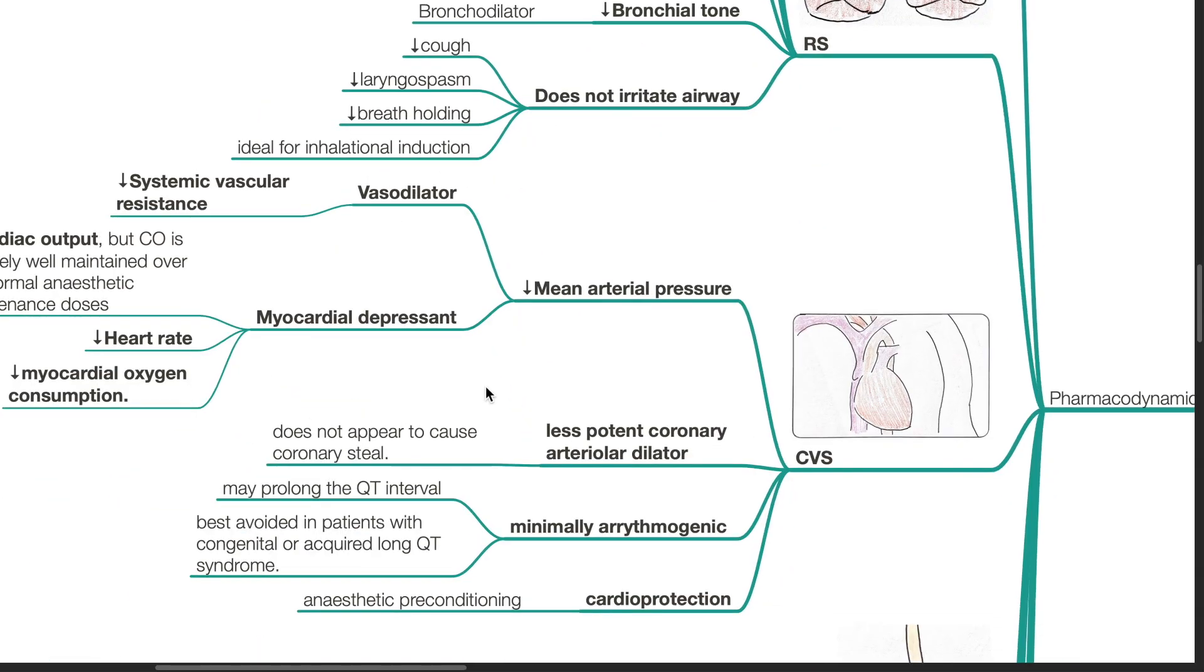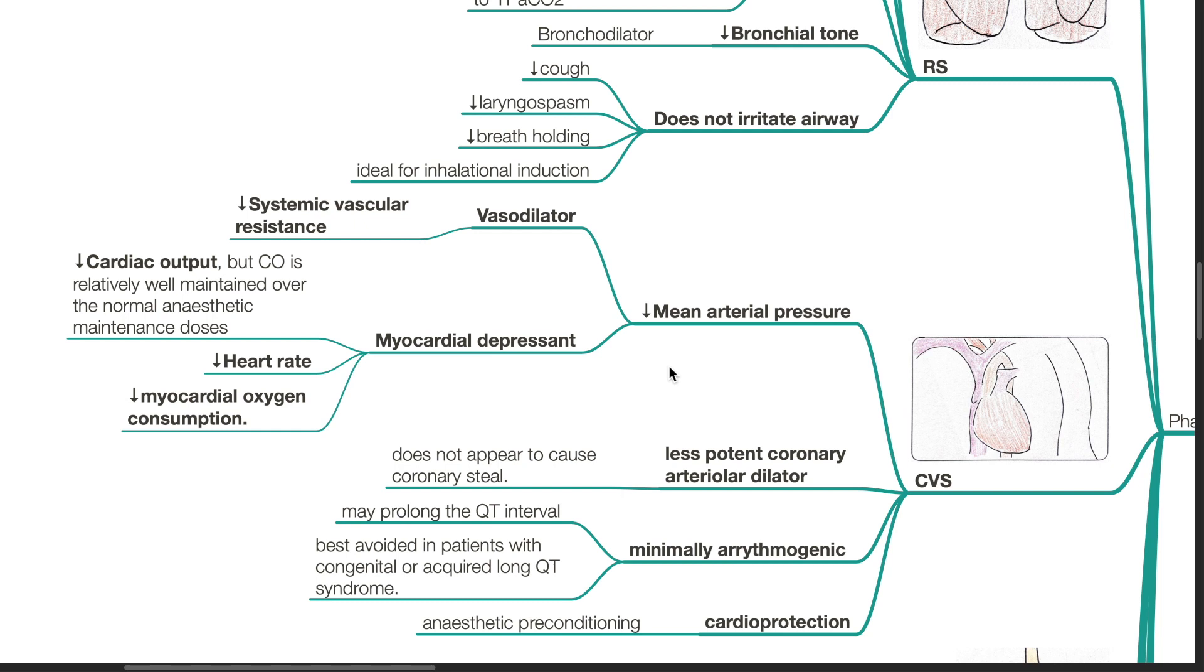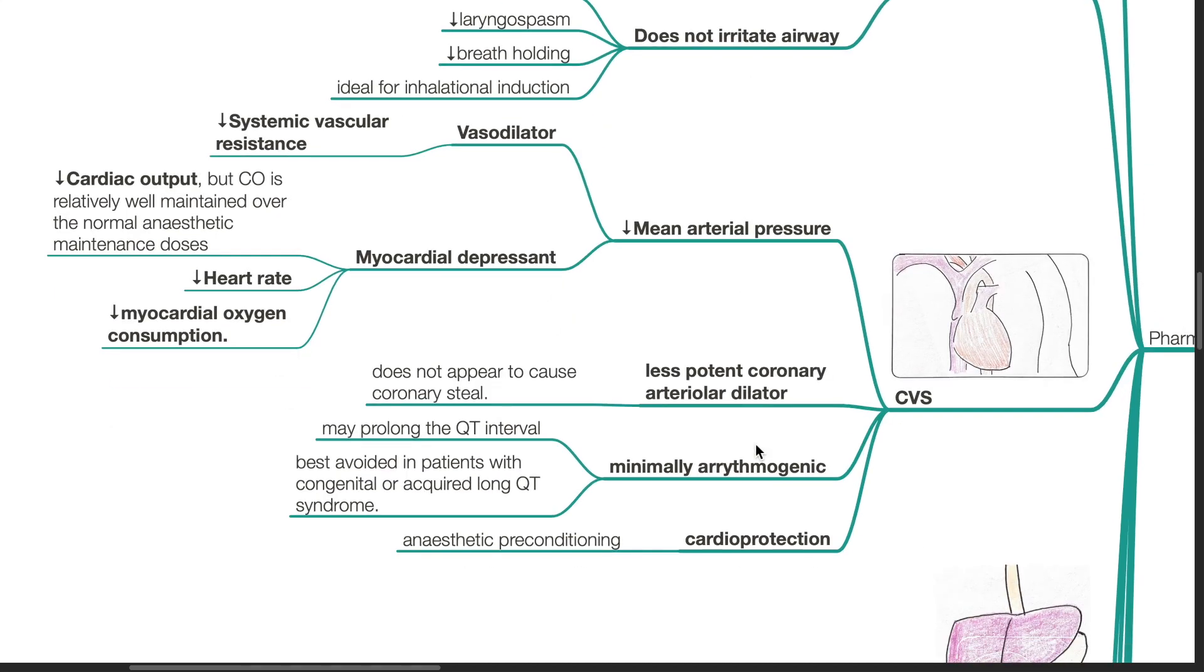Effects on the cardiovascular system. There is decrease in mean arterial pressure. Sevoflurane is a vasodilator and causes decrease in systemic vascular resistance. Sevoflurane has myocardial depressant effects. Cardiac output decreases. However, it is relatively well maintained over the normal anesthetic maintenance doses. There is decrease in heart rate and decrease in myocardial oxygen consumption. Sevoflurane is a less potent coronary arteriolar dilator compared to isoflurane. It does not appear to cause coronary steal. Sevoflurane is minimally arrhythmogenic. It may prolong the QT interval and is best avoided in patients with congenital or acquired long QT syndrome. There are cardioprotective effects from Sevoflurane analogous to ischemic preconditioning.